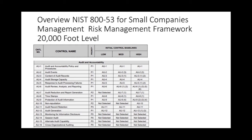AU-1 is audit and accountability policies and procedures. AU-2 is auditable events. AU-3 is content of audit records. AU-4 is audit log storage capacity. AU-5 is response to audit processing failures. AU-6 is audit review, analysis, and reporting. AU-7 is audit reduction and report generation. AU-8 is time stamps. AU-9 is protection of audit information. AU-10 is non-repudiation. AU-11 is audit record retention. AU-12 is audit record generation. AU-13 is monitoring for information disclosure. AU-14 is session audit. AU-15 is alternate audit logging capability. AU-16 is cross-organizational auditing.